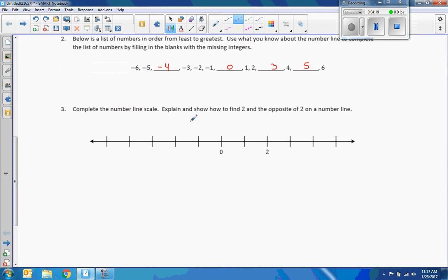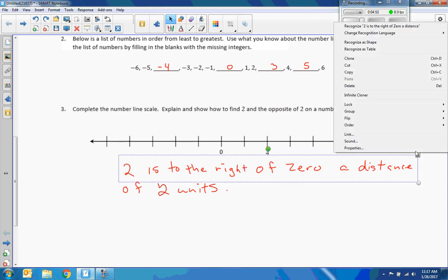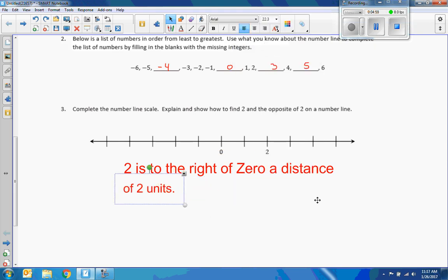Number three, complete the number line scale. Explain and show how to find two and the opposite of two on the number line. So I would say two is to the right of zero a distance of two units. Okay. Two is to the right of zero a distance of two units. So that's how I found two. So now I'm going to put a dot there.